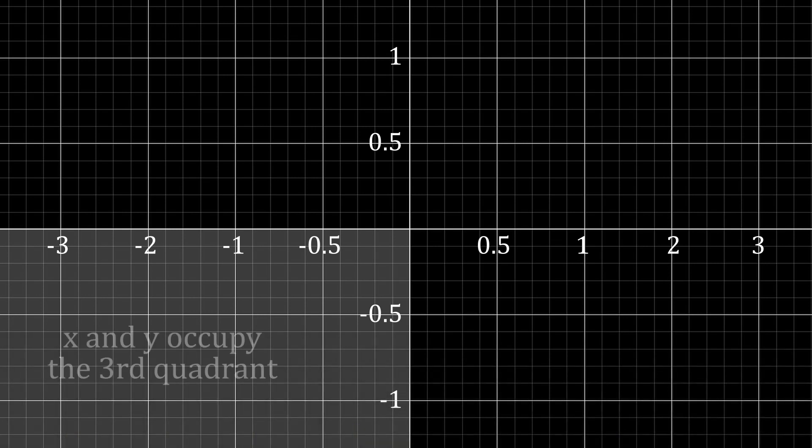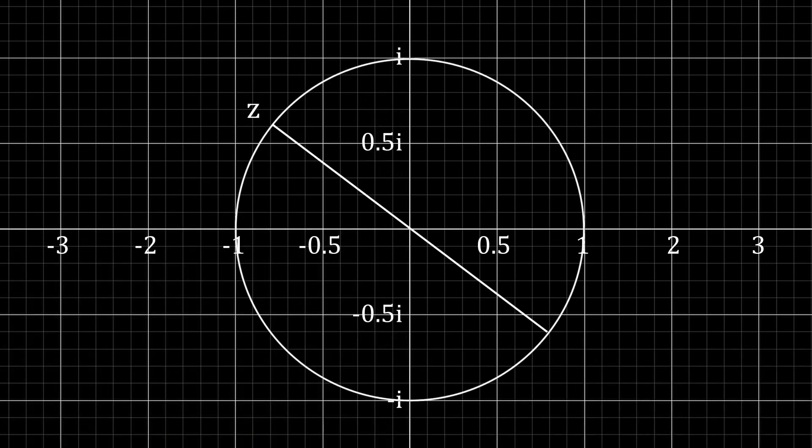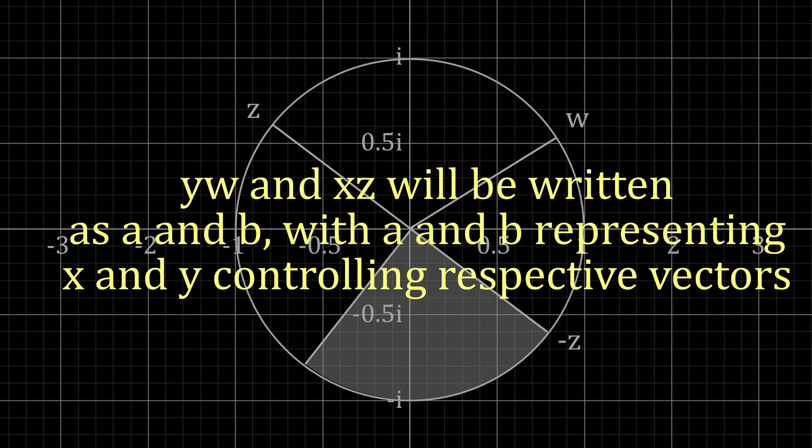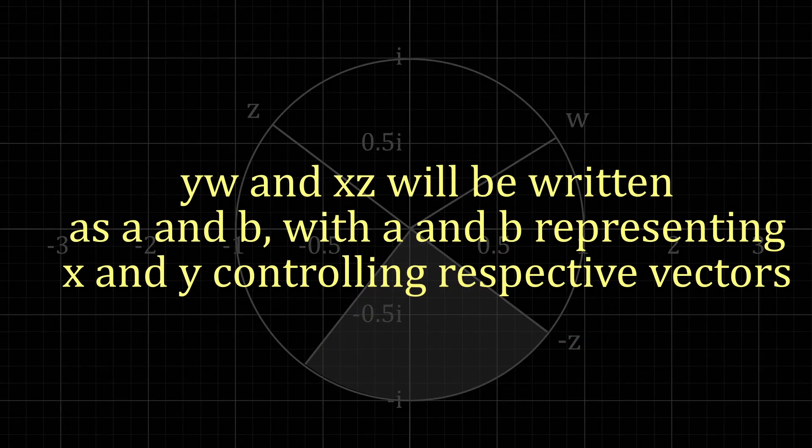Now we're really getting somewhere. Let's think of x and y as adjustable values tied to a vector, rather than real numbers. To signify this leap, we can write xz and yw as a and b.